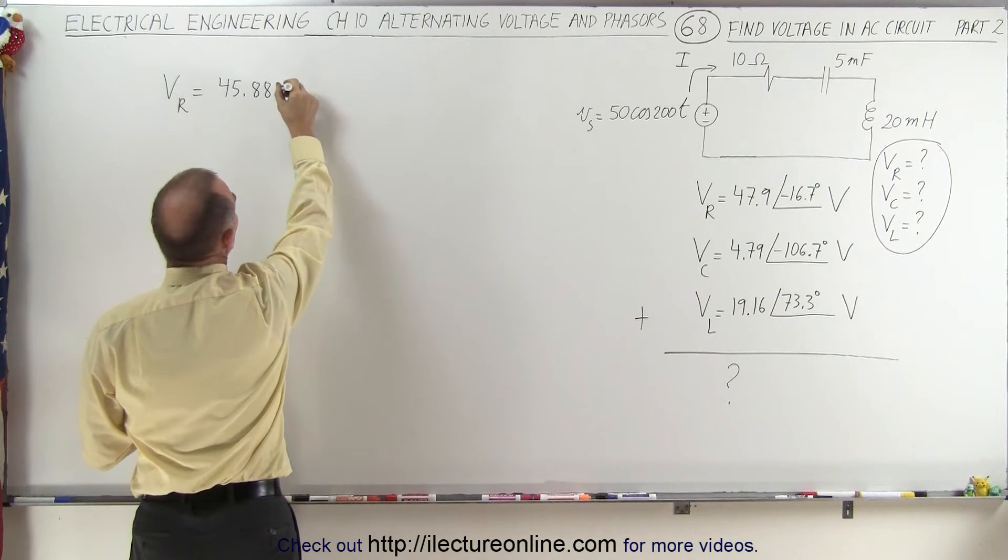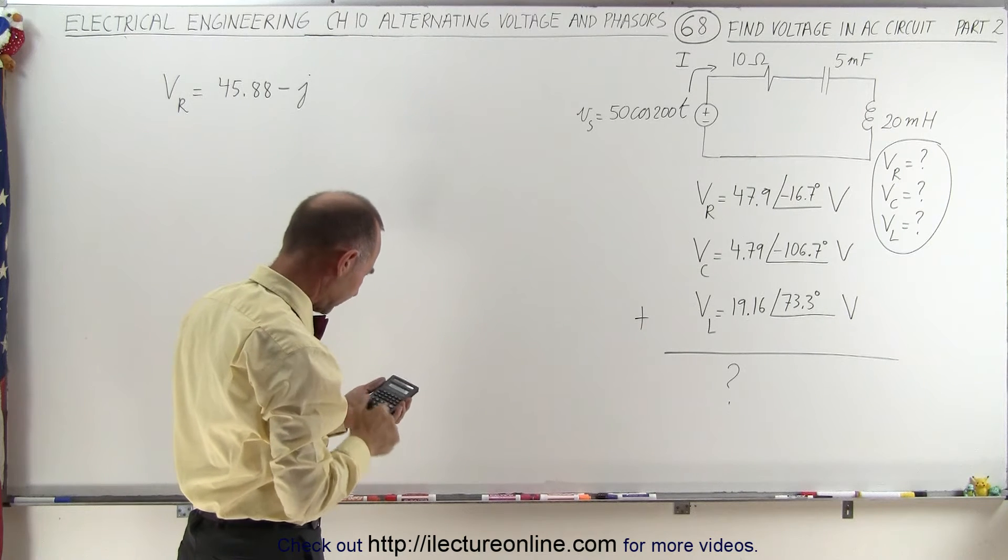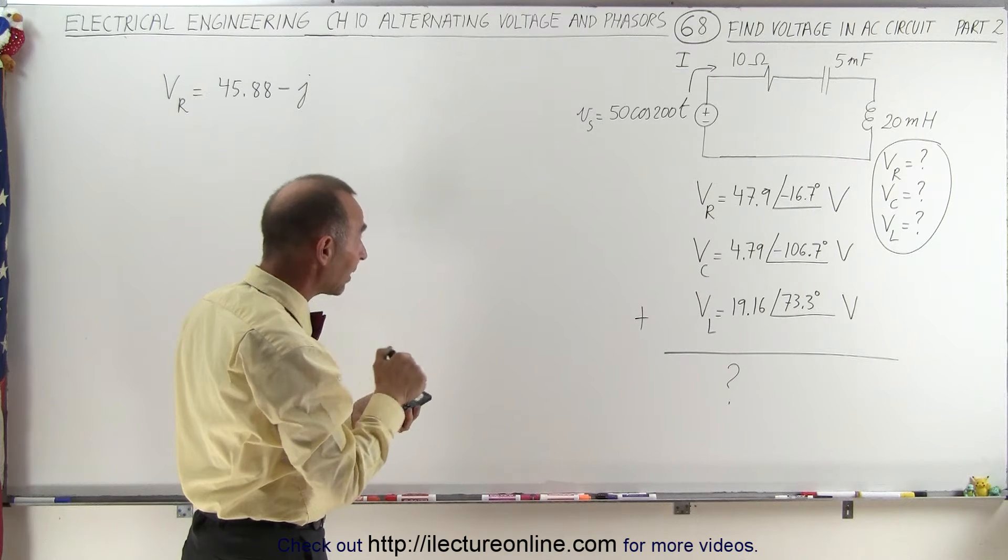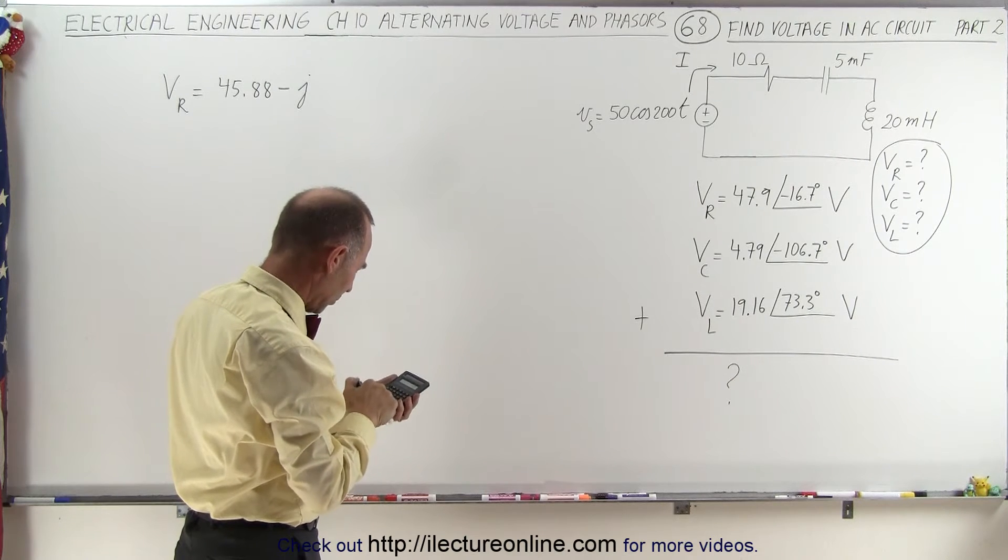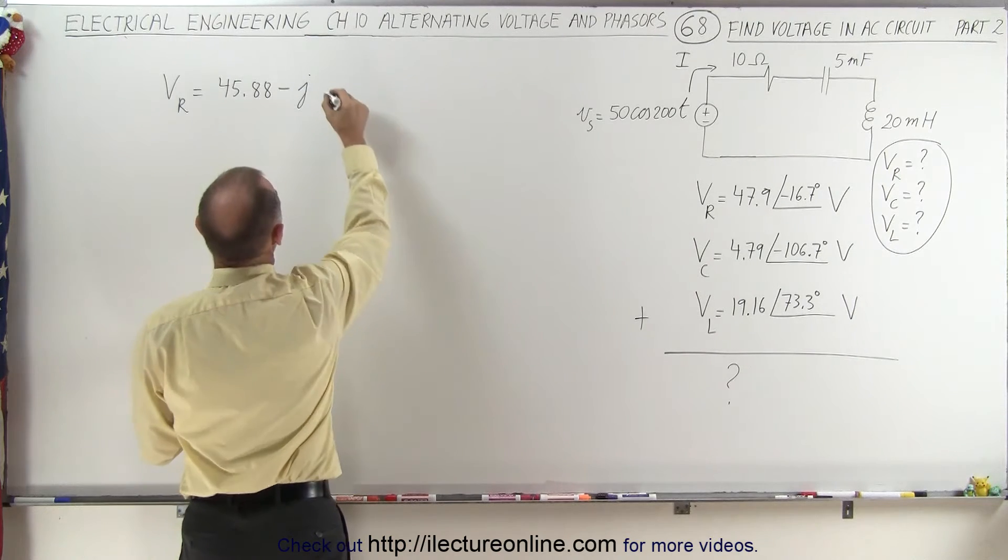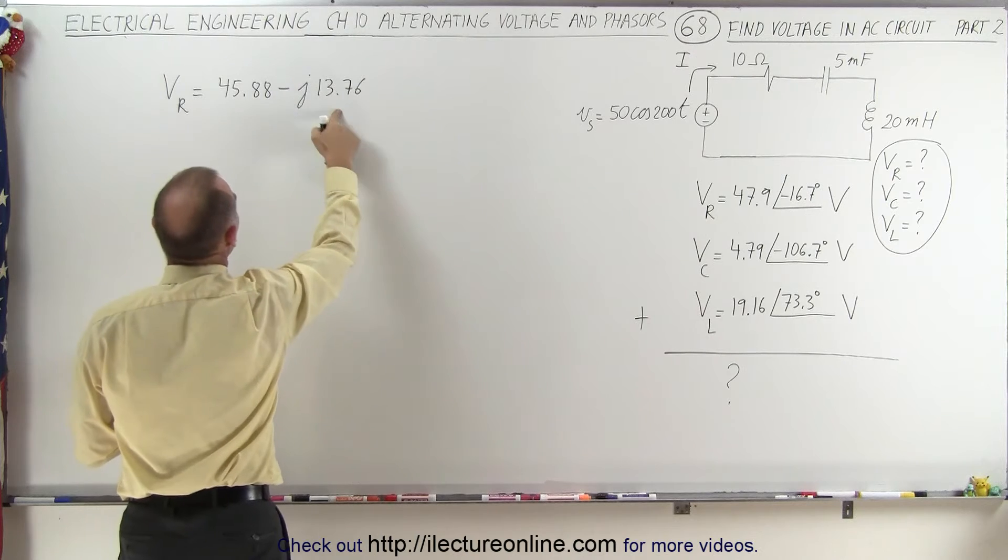And then we're going to have minus j. I'll take the sine of negative 16.7, and multiply that times 47.9, and that gives us minus 13.76. So notice there's a real and an imaginary part.